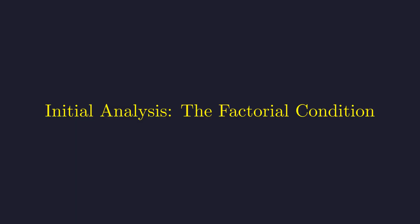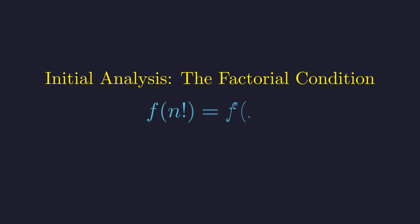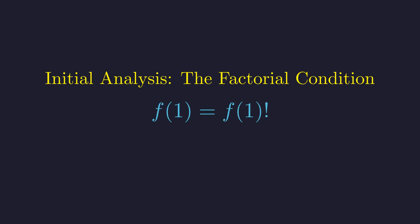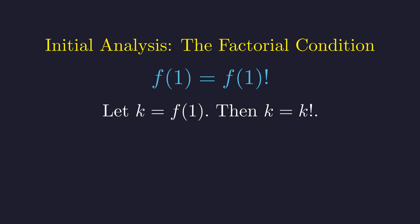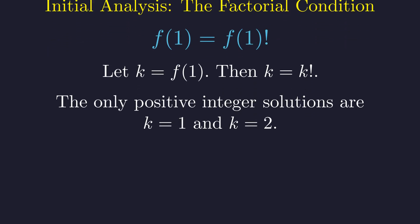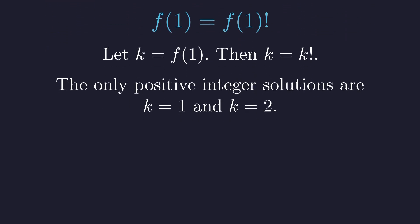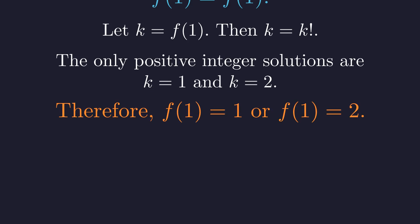The factorial condition is the easiest entry point. Let's see what happens when we plug in the smallest possible input. Setting n equal to 1 gives us f(1!) = f(1)!, and since 1! is just 1, the value of f(1) must be a number equal to its own factorial. Since the function maps to positive integers, we need k = k! The only positive integers satisfying this are 1 and 2 — a major breakthrough. The value of f at 1 is restricted to just two possibilities, giving us a clear path forward. We'll investigate each case separately.